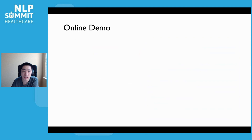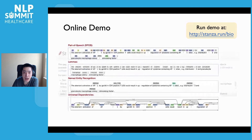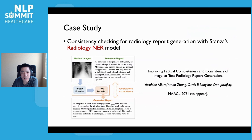To help you play with Stanza's biomedical and clinical packages and run them on your text without writing a single line of code, we've created an online demo page at stanza.run/bio, where you can select your annotators and model of choice, input the document you want to annotate, and get instant annotation results and visualizations for syntactic and NER analysis. Try it out on your text today.